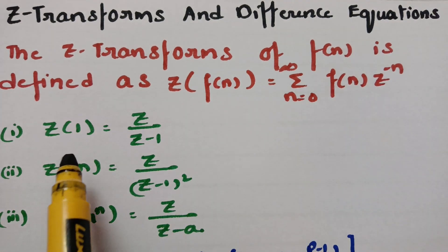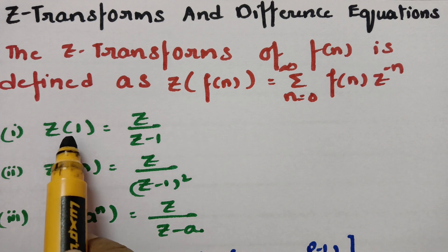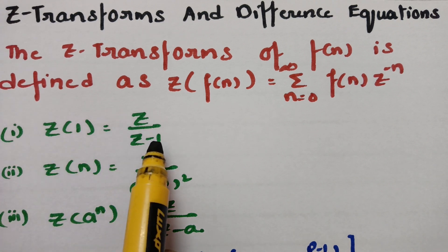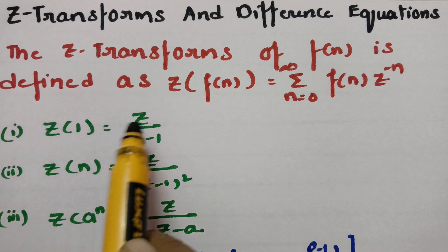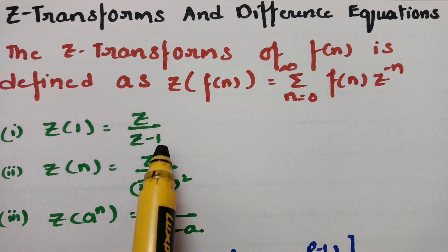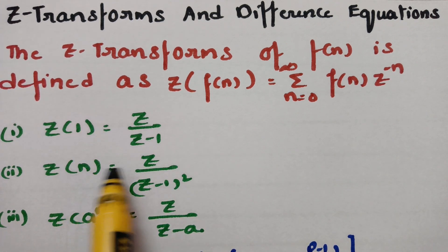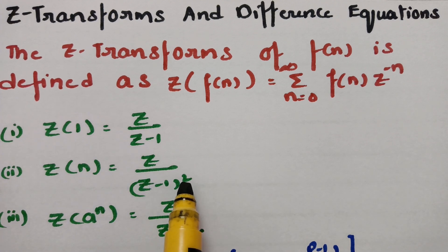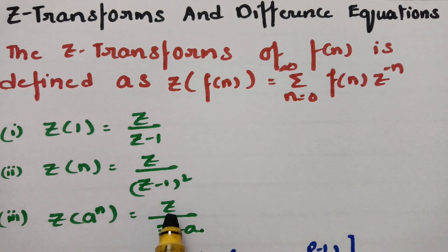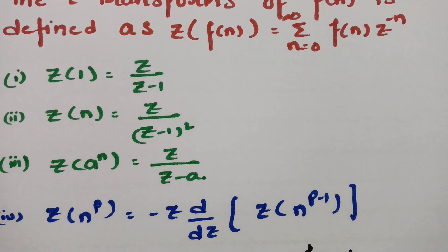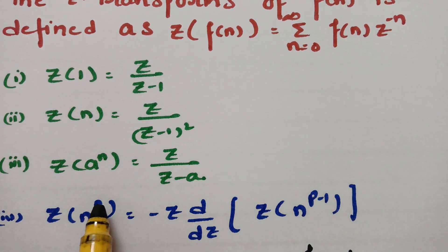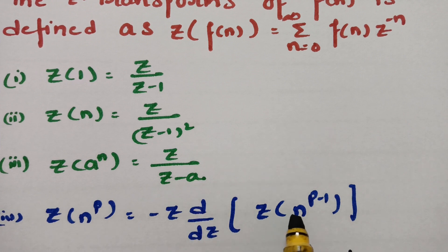Here are some standard functions. Z of 1 is equal to z by z minus 1. Z of n is equal to z by z minus 1 whole square, and Z of a to the power n is equal to z by z minus a. The most important function here is Z of n to the power p is equal to minus z into d by dz of Z of n to the power p minus 1.